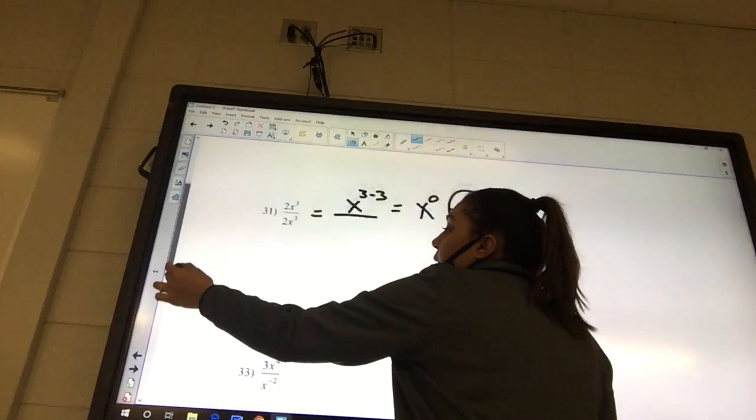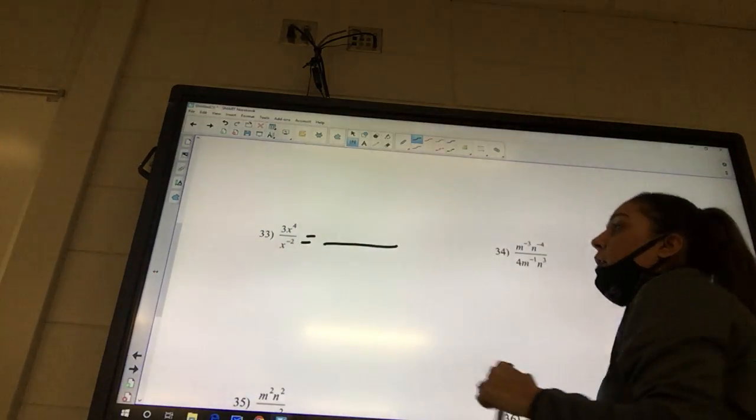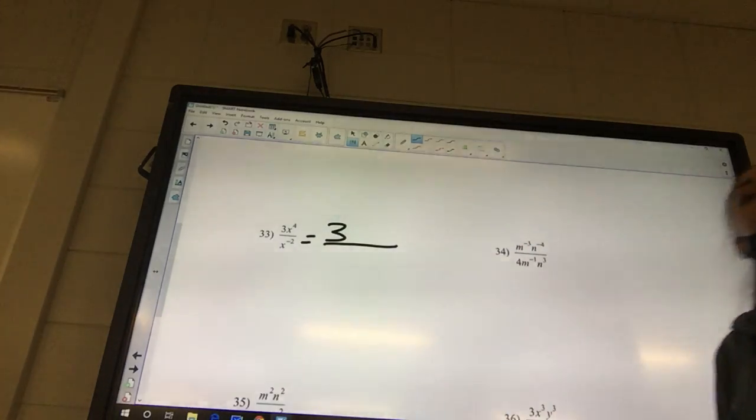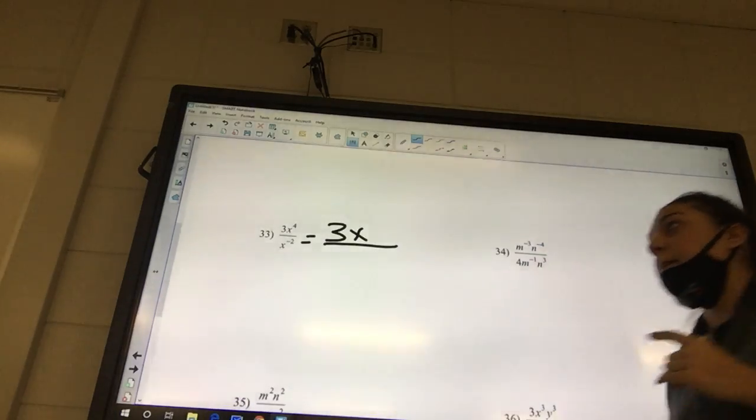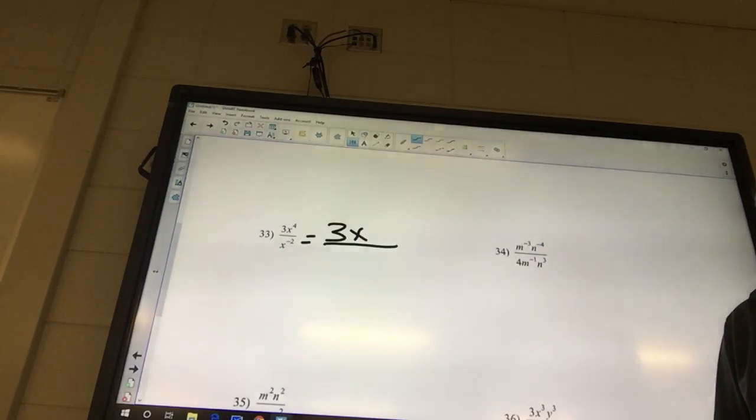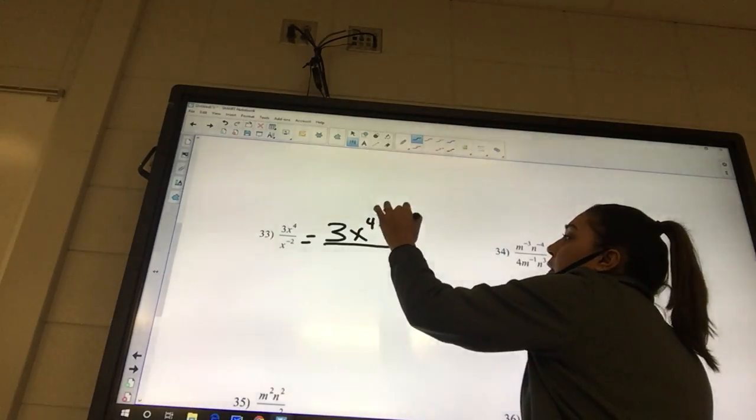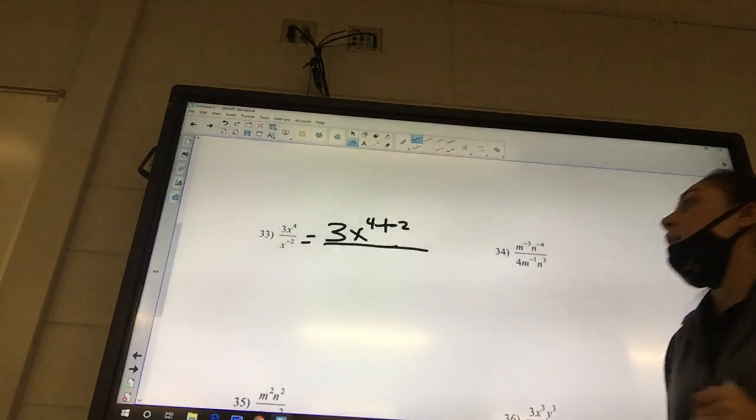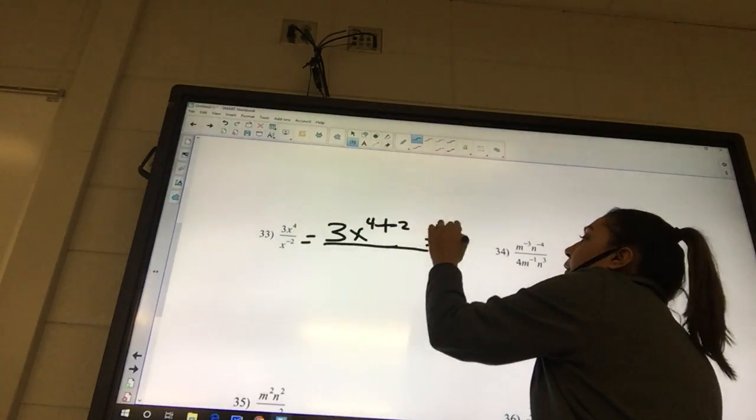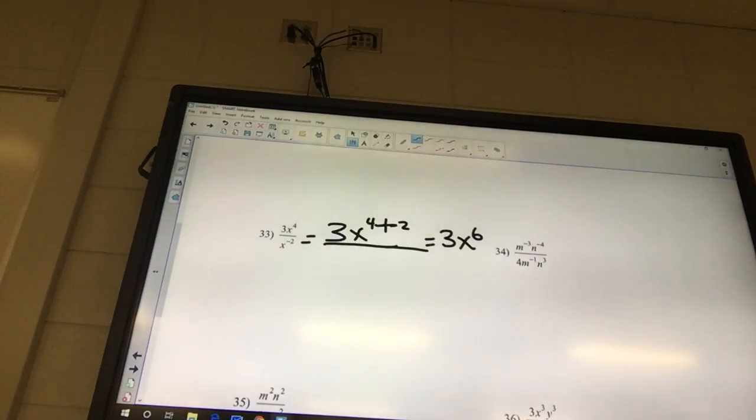Okay, 33. We leave our big numbers where they're at. So you can fill in your 3, and we subtract the exponents. So it's going to be x to the what? 2. 4 minus negative 2. Negative 2. What's a negative negative? Positive. So you're going to have 3x to the 6th. Do we have anything else to do with that? No. Are there any negatives? No. Are there any zero exponents? No, it's 3x to the 6th.